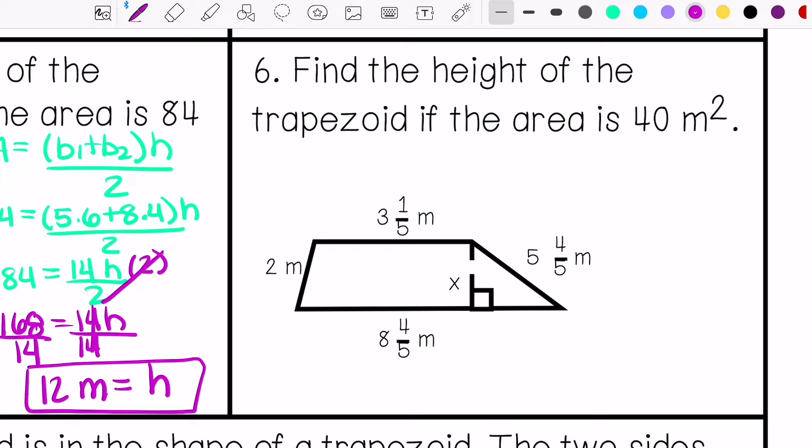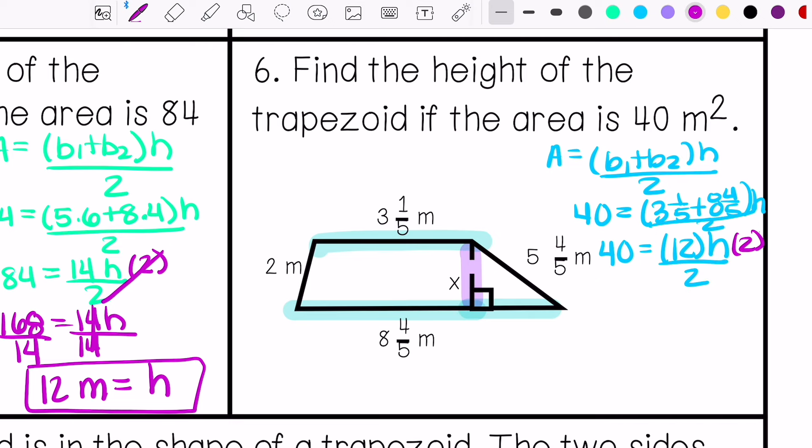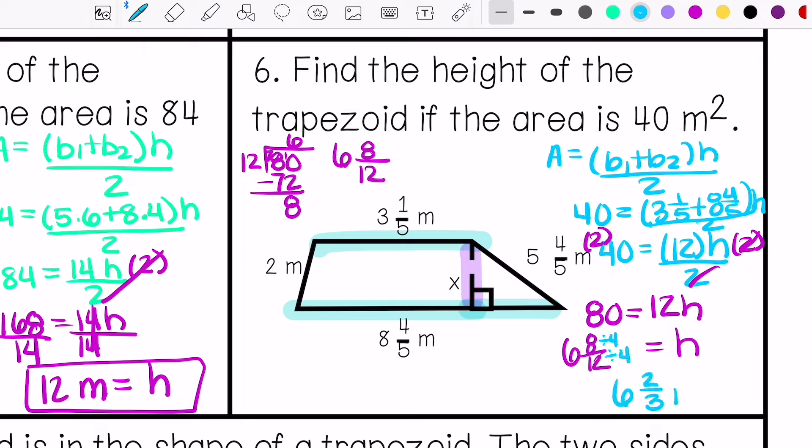Alright, this one we're finding the height. These are my bases. This is my height. My area is 40. So my height is 6 and 2 thirds meters.